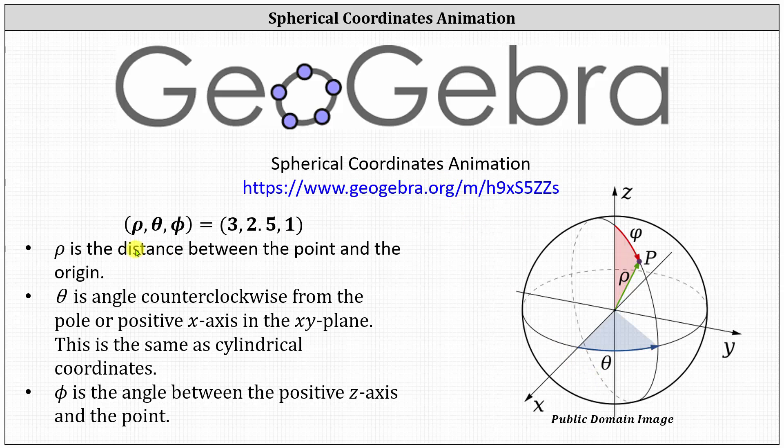In spherical coordinates, a point is an ordered triple rho, theta, phi, where rho is the distance between the point and the origin, which we see here in green on the right for point P. Theta is the angle counterclockwise from the pole or positive x-axis in the xy-plane, which we see in blue on the right. And finally, phi is the angle between the positive z-axis and the point, which we see here in red.